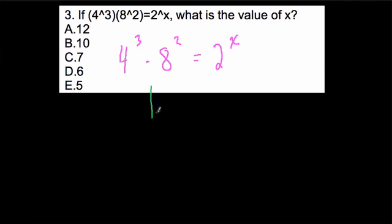What's nice about this problem is you might notice right away that 4 to the third and 8 squared are both 64. So essentially we have 64 times 64.